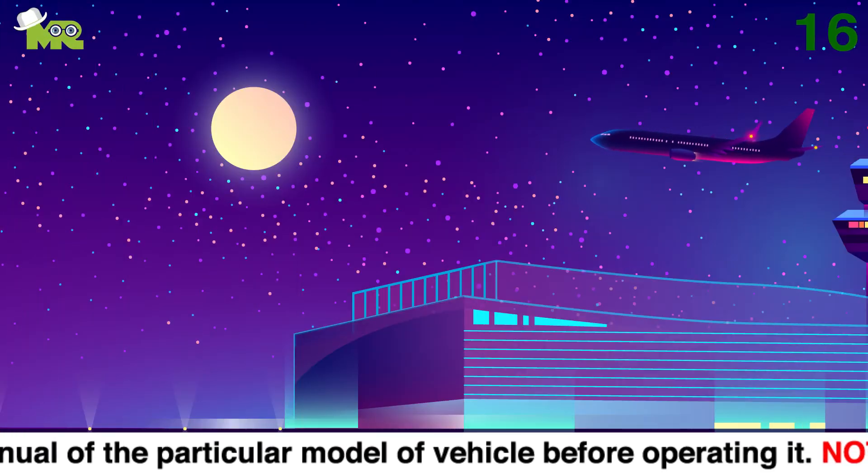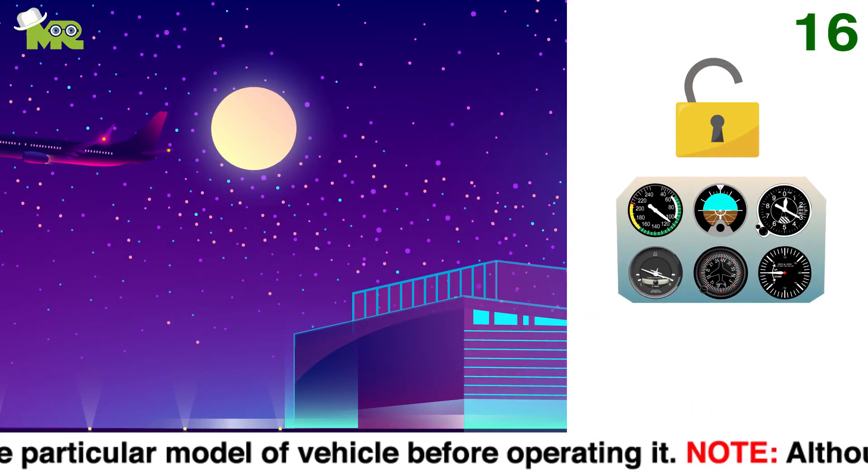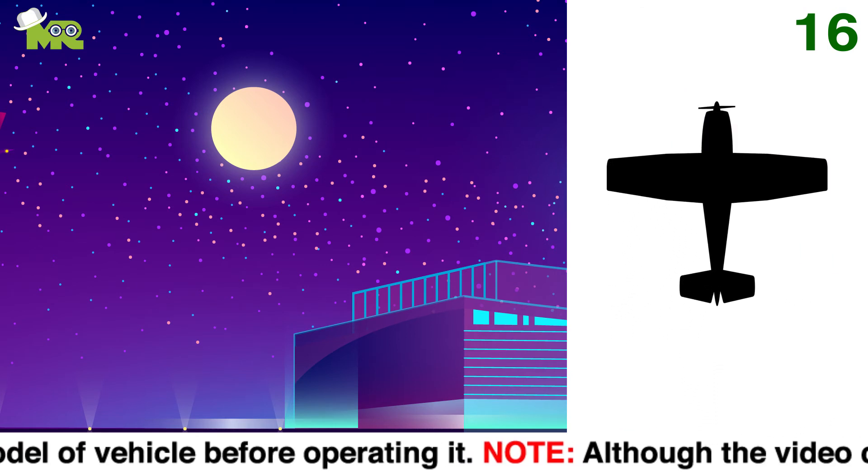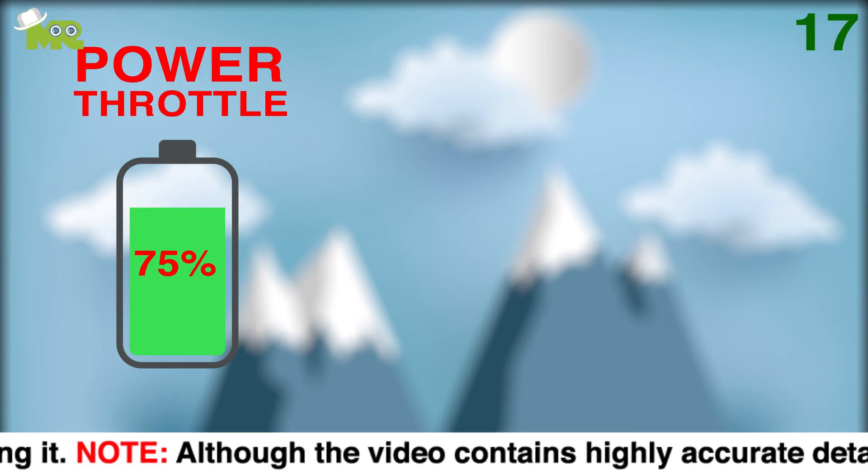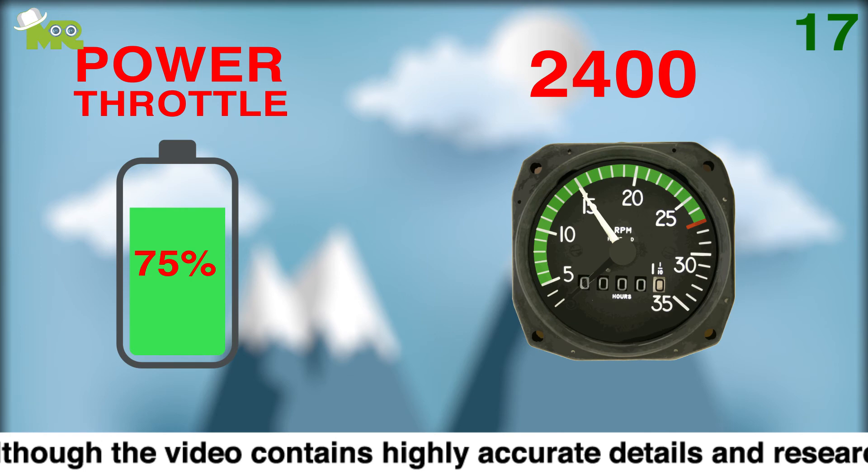Sixteen, after you come to a constant cruising speed, set the controls and lock them so you can focus only on keeping your airplane level. Seventeen, reduce the power throttle to around 75% and maintain the RPM of around 2400 RPM.